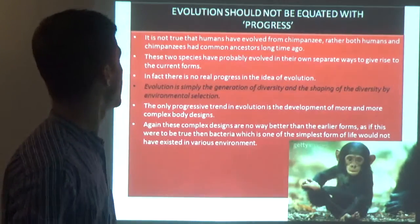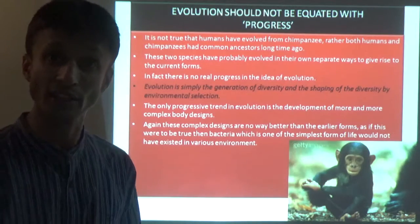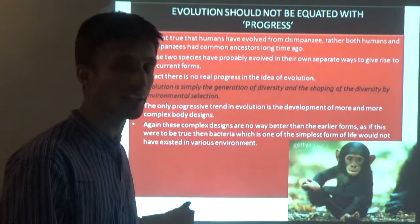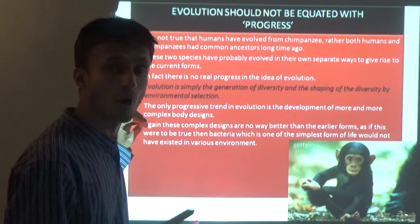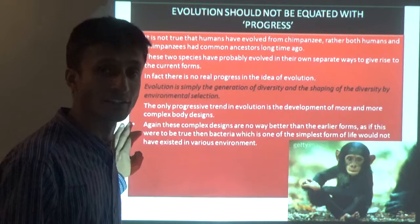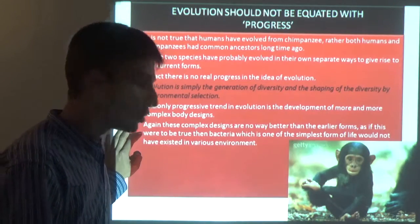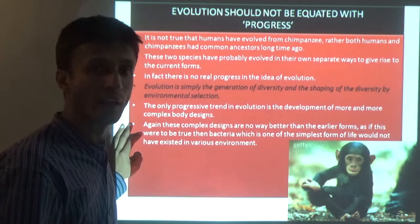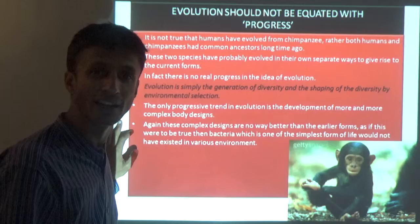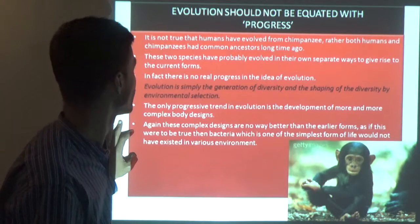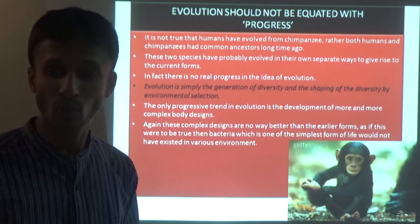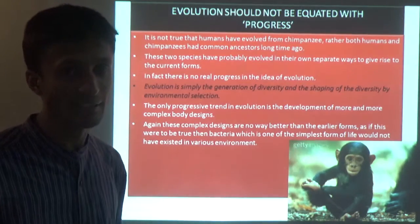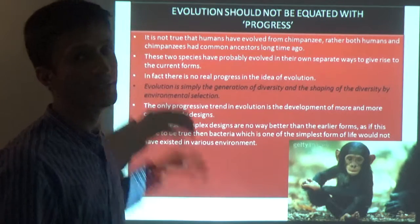It is not true that humans have evolved from chimpanzees. Rather, both humans and chimpanzees had a common ancestor long ago - we and chimpanzees share common features, meaning we have common ancestors. This is like the relationship of one's own brother and cousin brother - we can say chimpanzee is like our cousin. These two species have probably evolved in their own separate ways, in their own environmental conditions, to give rise to their current forms.